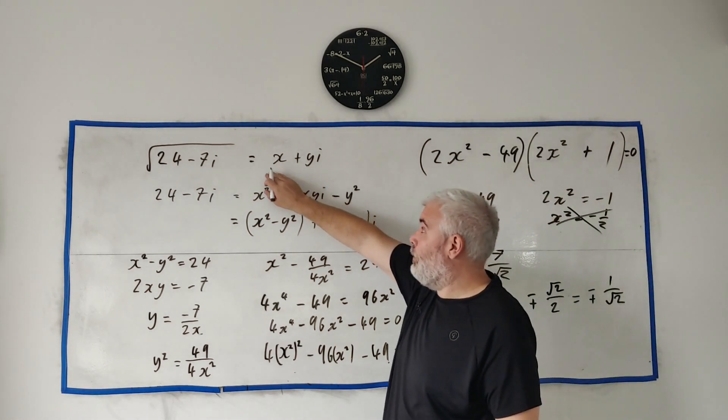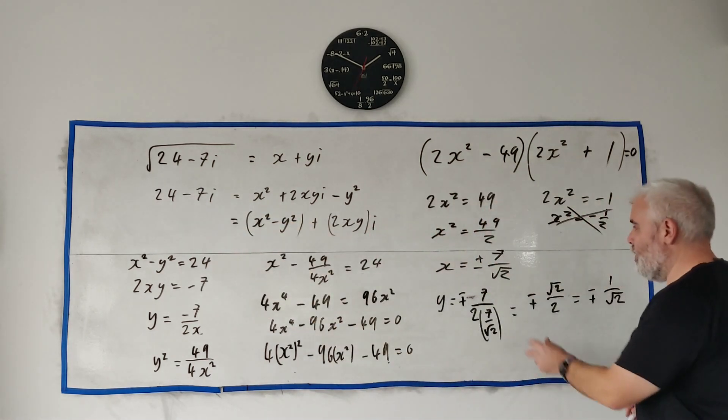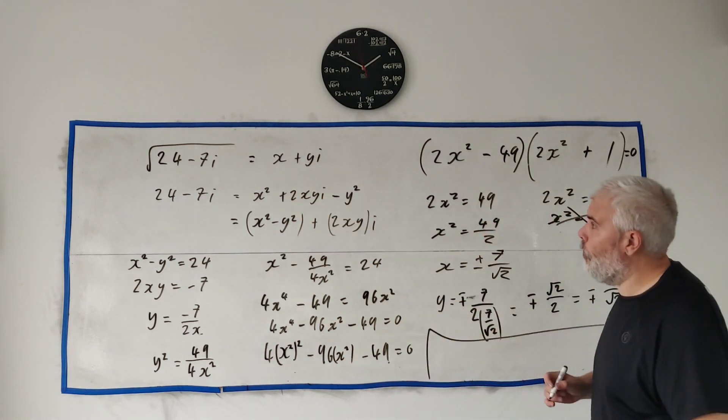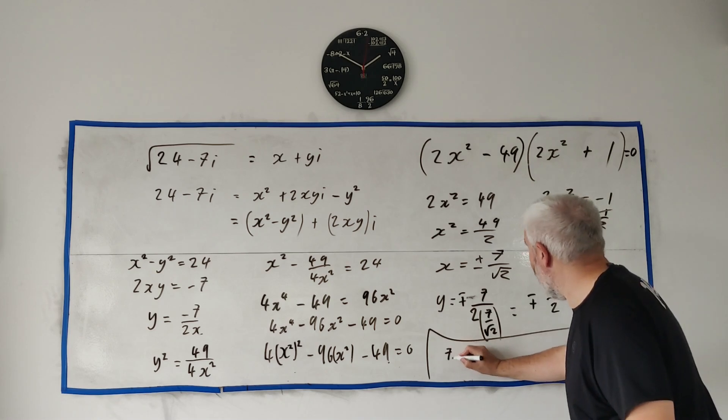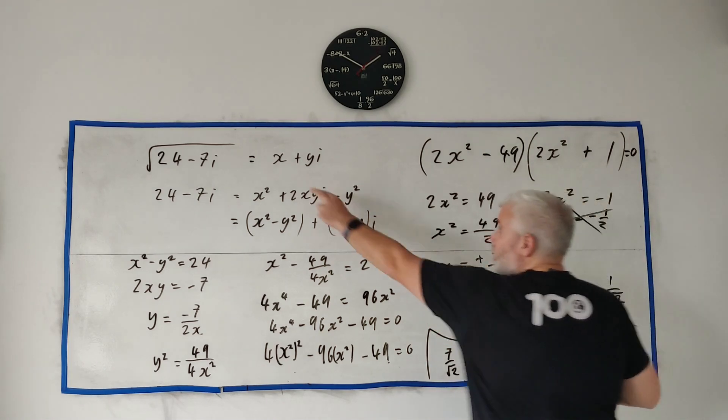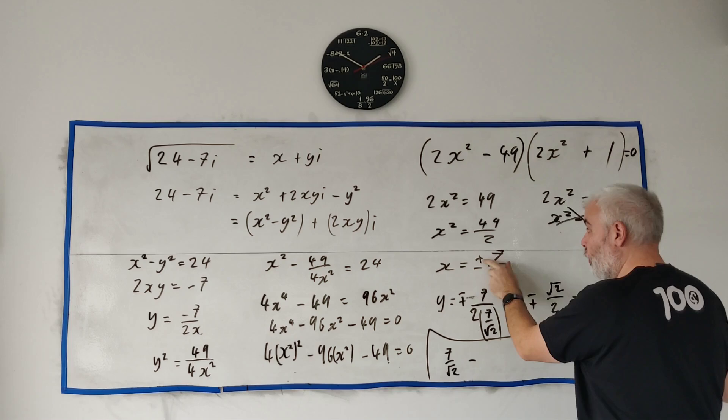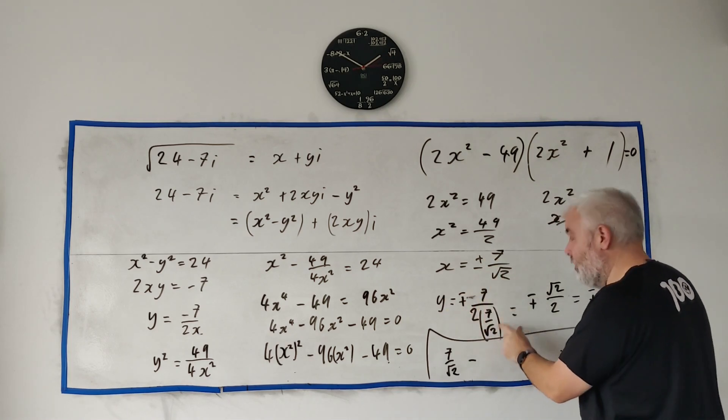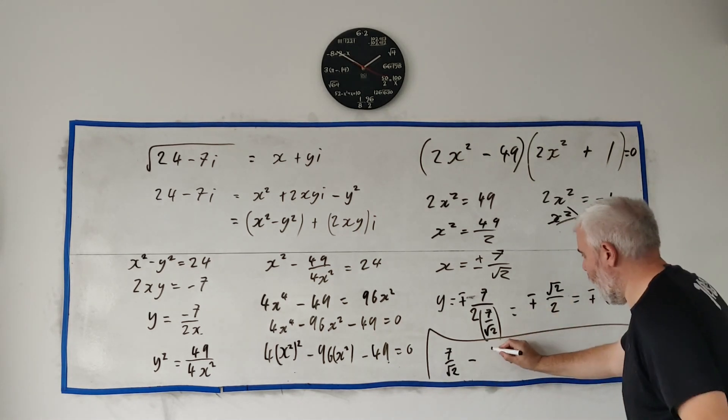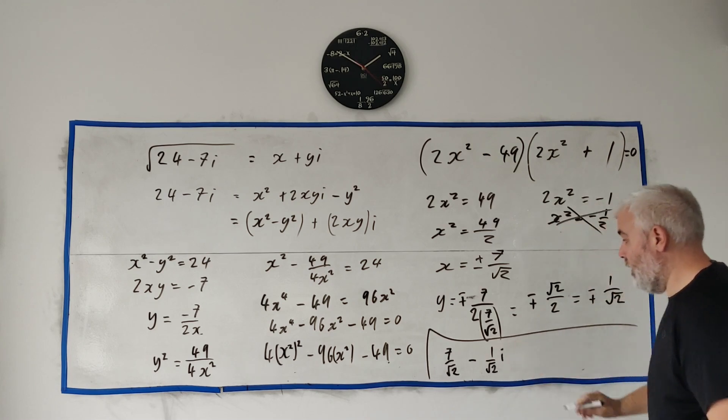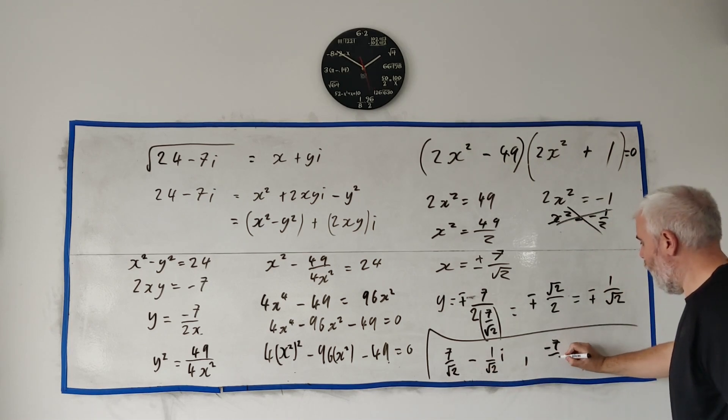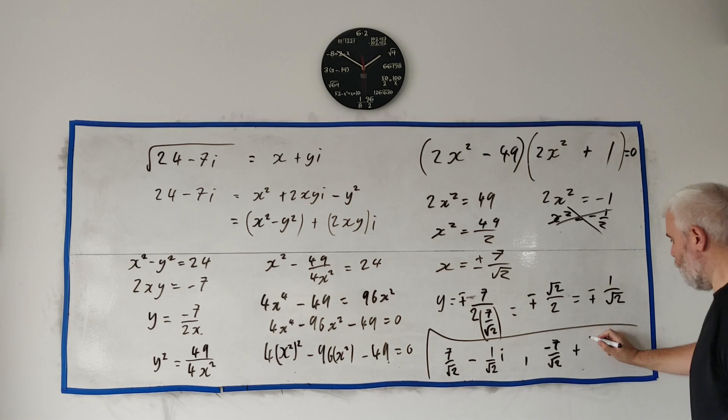So putting these together, because one final thing we still want to say what are the answers to this. Putting this together, I would say one of the answers is—let's put a little box down here—the two answers for the square root of 24 minus 7i is 7 over square root of 2, minus. So this is x plus y. Well x is plus this and y is minus this, so the minus and this plus get me this minus, and minus this gets me 1 over square root of 2 times i. That's one possible answer.